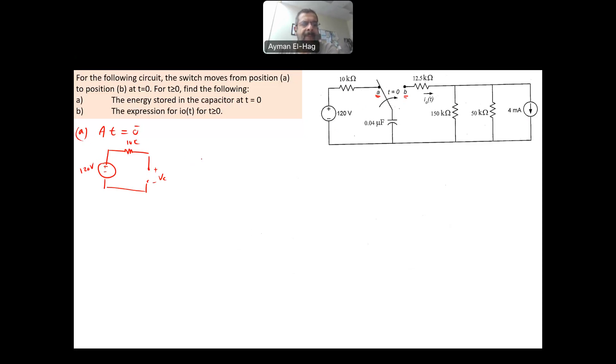Your VC will be, if you apply KVL here, the current is equal to 0 because this is an open circuit. So your VC will be equal to 120 volt and your VC, the moment you close the switch is also equal to 120 volt because the voltage doesn't change instantaneously in the capacitor.